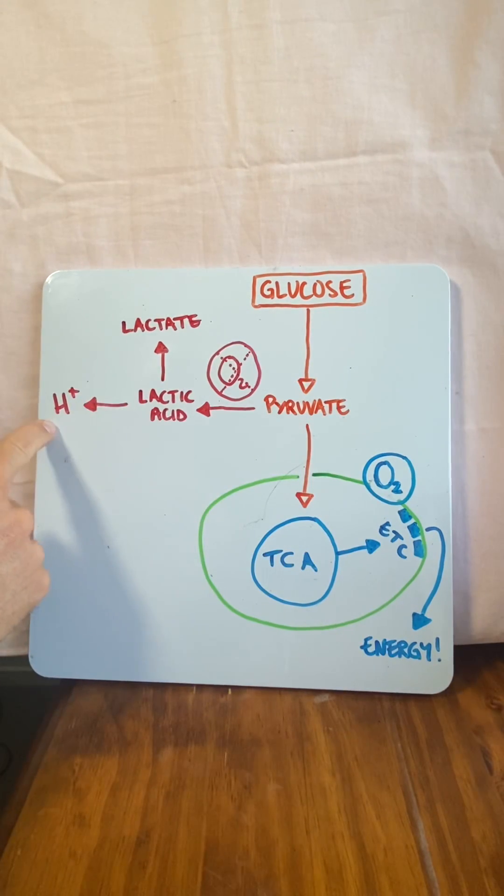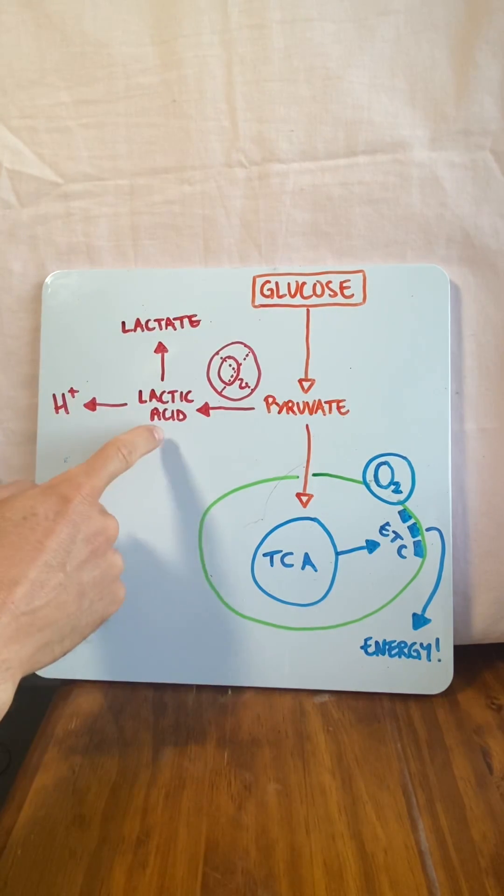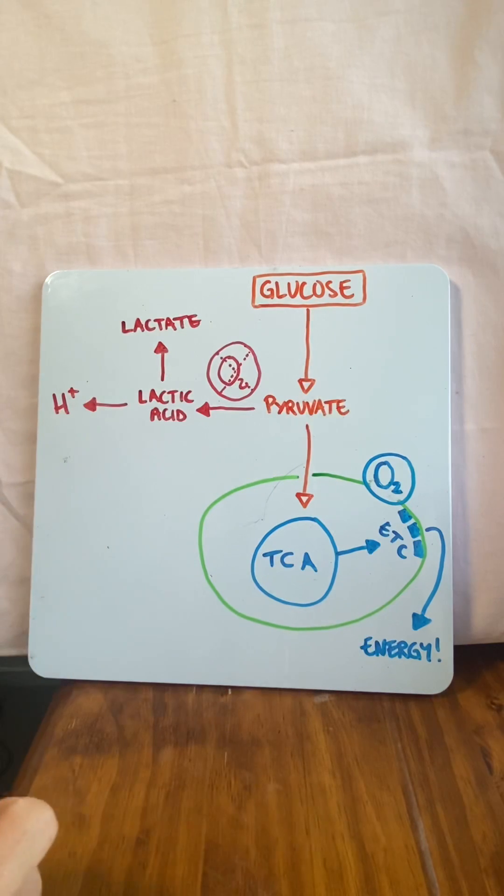Now we also think that hydrogen ions are produced through a separate process, and that the lactate actually helps neutralize the hydrogen ions. So lactate isn't actually the cause of your muscle pain. Now your question might be, what about lactic acid? Well, there's actually no evidence that lactic acid exists.